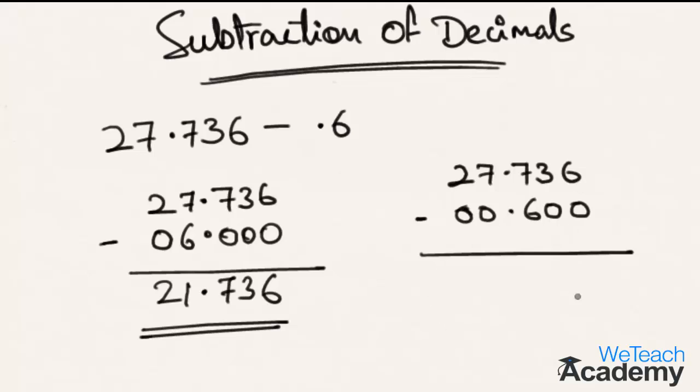So 6 minus 0 is 6, 3 minus 0 is 3, 7 minus 6 is 1. The decimal point remains in the same position. 7 minus 0 is 7, 2 minus 0 is 2. Hence the result is 27.136. Hope you understood the basics of subtracting decimals. Please like and subscribe to WeTeachAcademy.com. Thanks for watching, have a nice day.